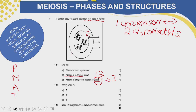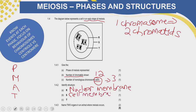It says: identify structure R, which I have already labeled — structure R is a nuclear membrane. Many learners don't know the difference between a nuclear membrane and a cell membrane. If you are looking at this cell, S, which is on the outside, would be the cell membrane. Then T is pointing to the space within the nucleus — that would be the fluid in the nucleus, which is called the nucleoplasm.